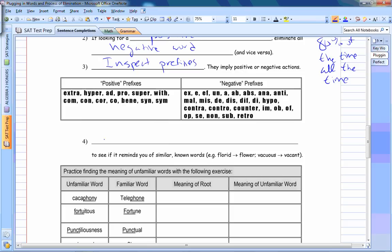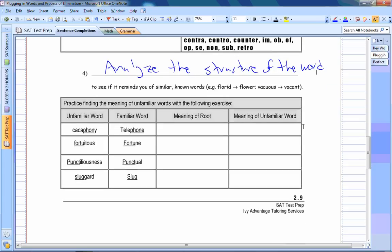Also try analyzing the structure of the word. That can also help. So if you may not recognize root or prefixes don't exist or not really helping you, sometimes just relating it to a familiar word or similar word can help. Like we see these unfamiliar words like cacophony, fortuitous, punctiliousness, sluggard. These are pretty tough words, especially if your vocab is not that strong or if you're fairly new to the English language. You wouldn't expect many people to know these words.